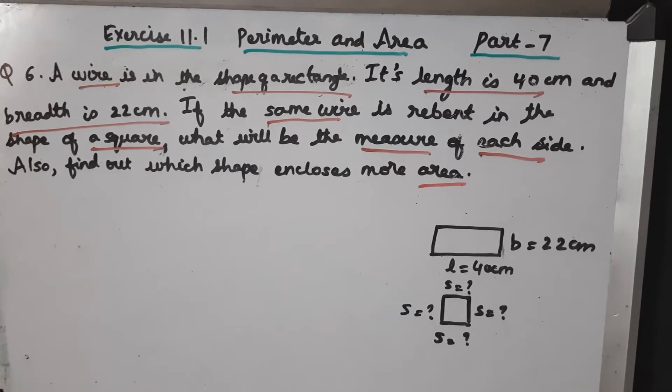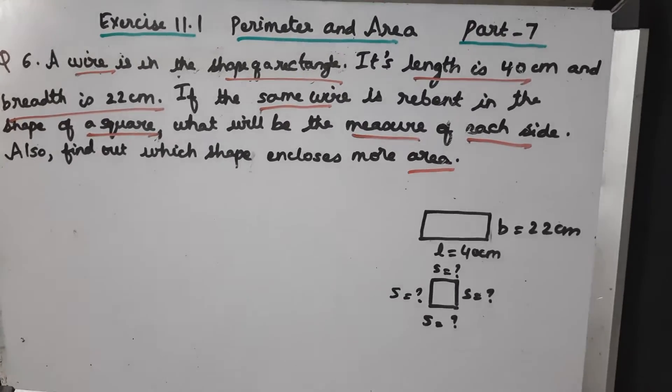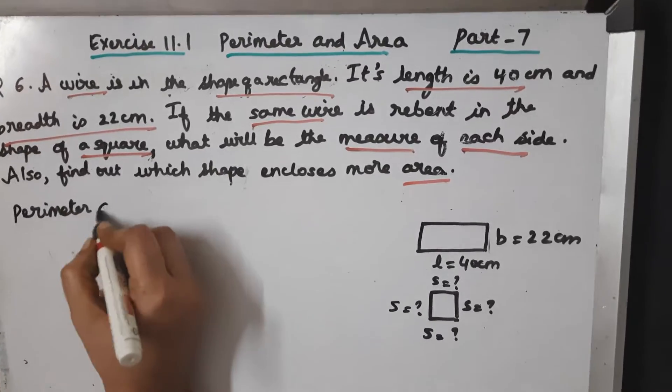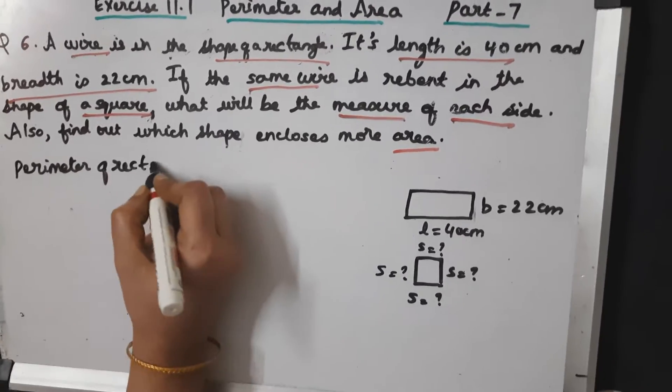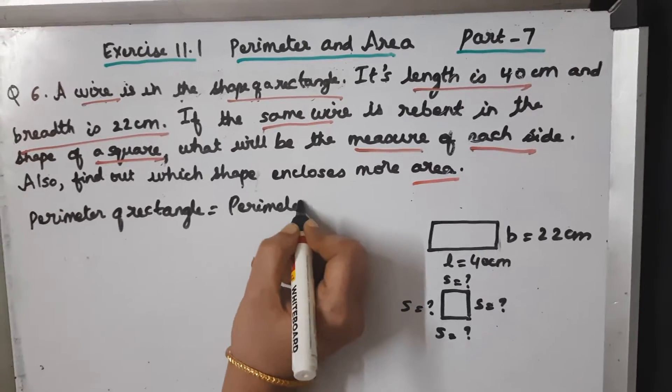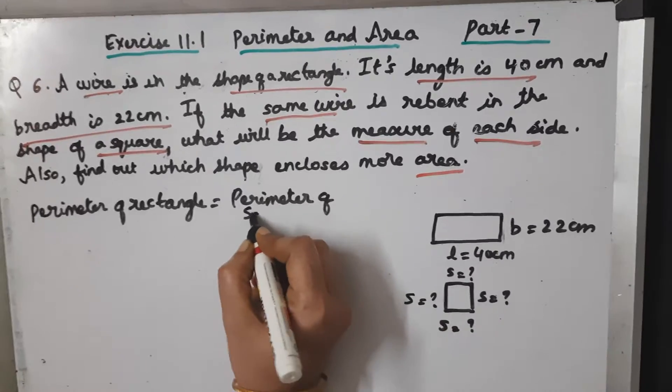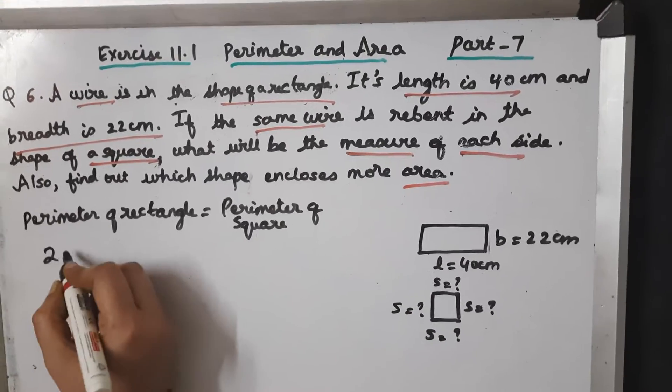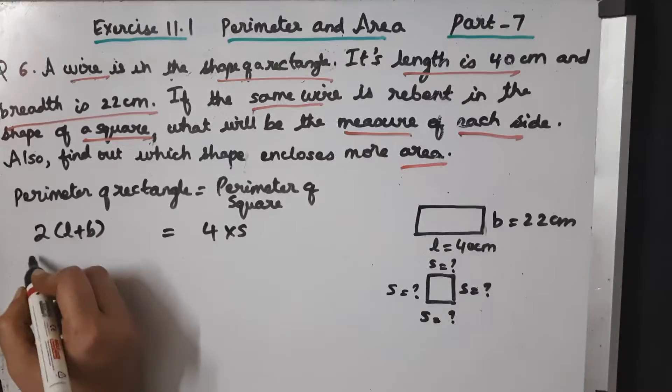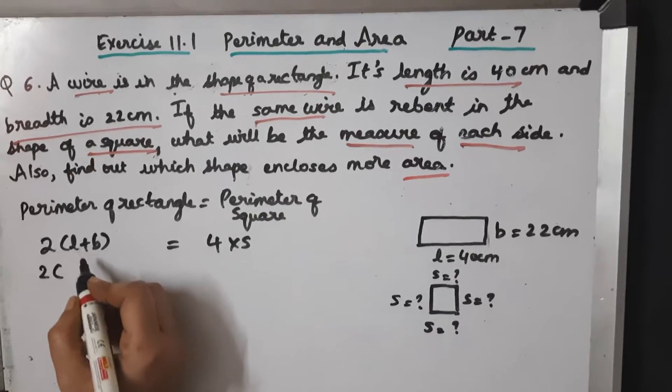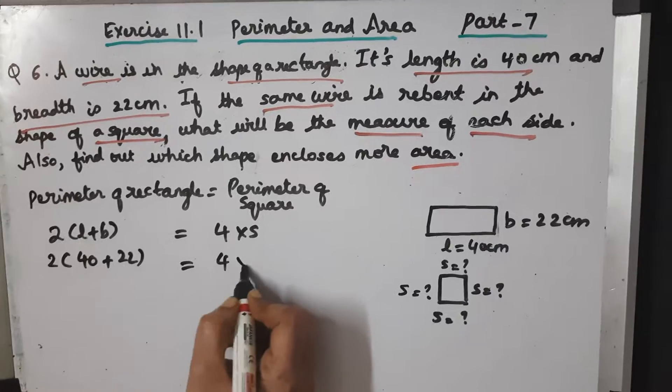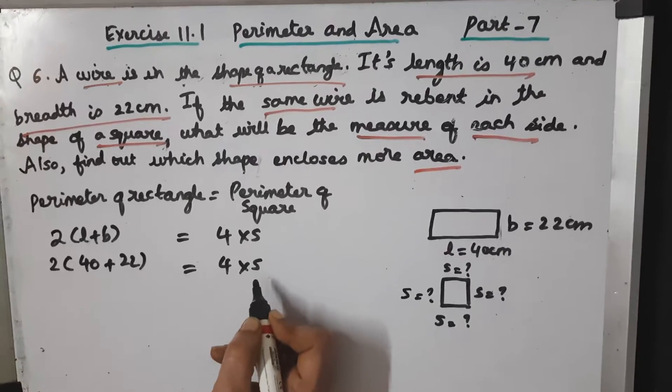First let's find out the perimeter of rectangle and perimeter of square. Perimeter of rectangle formula is 2 into L plus B, perimeter of a square is 4 into S. Let's substitute: length is 40, breadth is 22, side we don't know so we write it as S.